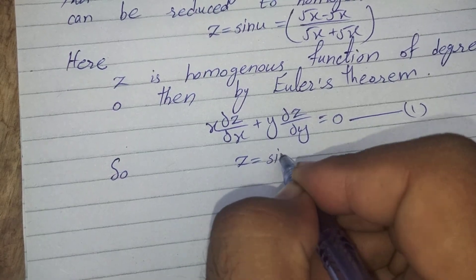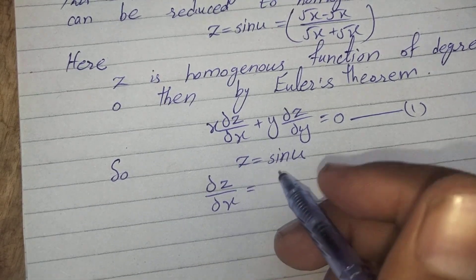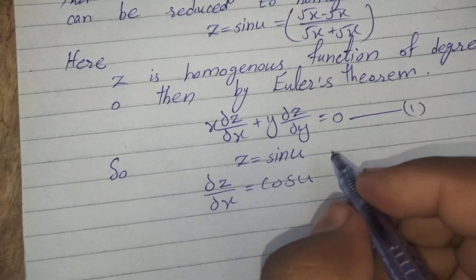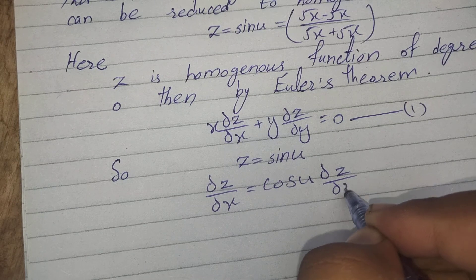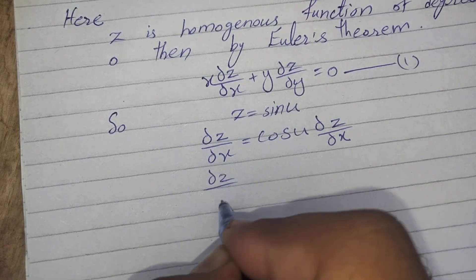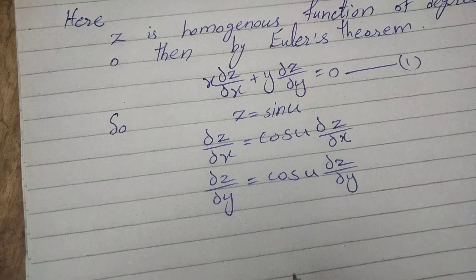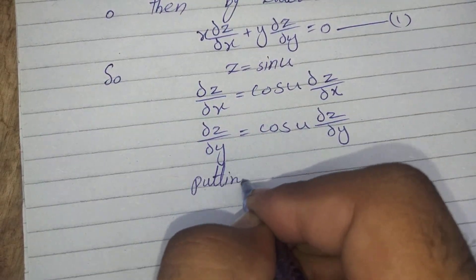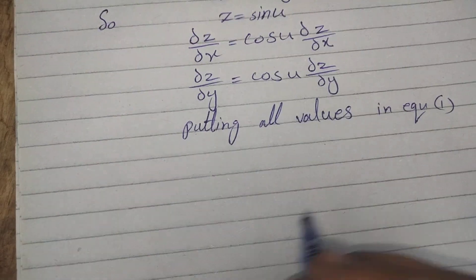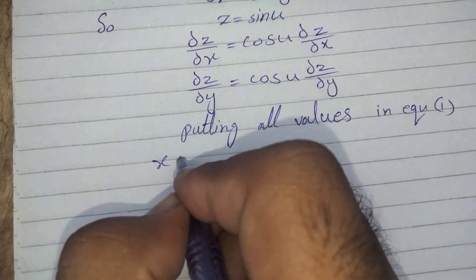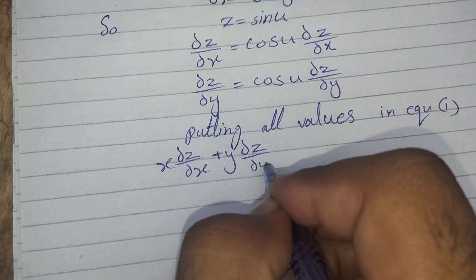Now, since z = sin(u), we compute the partial derivatives: ∂z/∂x = cos(u)(∂u/∂x) and ∂z/∂y = cos(u)(∂u/∂y). Putting all values into equation 1: x(∂z/∂x) + y(∂z/∂y) = 0.